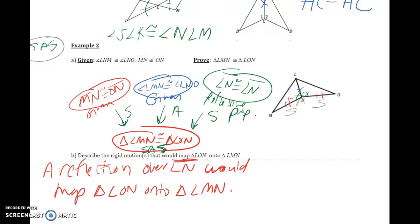A reflection over LN would map triangle LON onto triangle LMN.